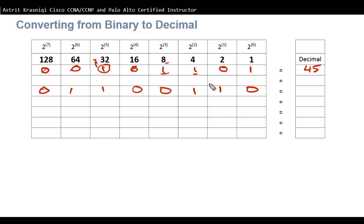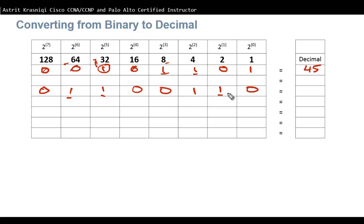Another example: 01100110. Ignore the zeros and add the ones. This bit represents 64, this one represents 32 — that's 96. This bit represents 4, so 96 + 4 = 100. This bit represents 2, so that's 102. The binary number 01100110 equals 102 in decimal.